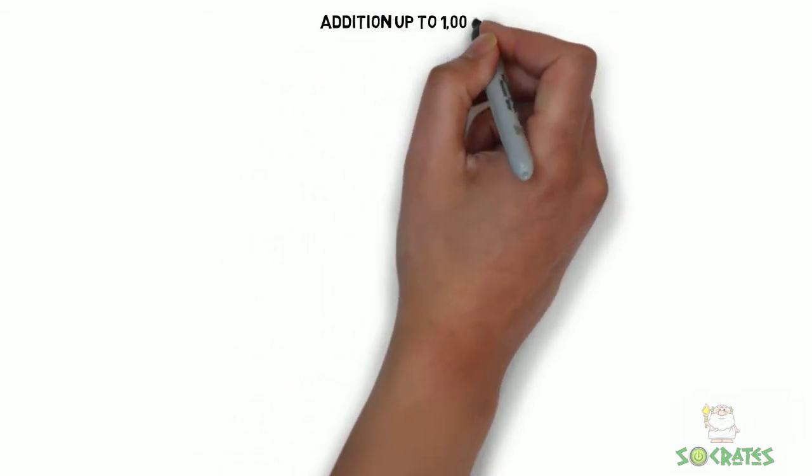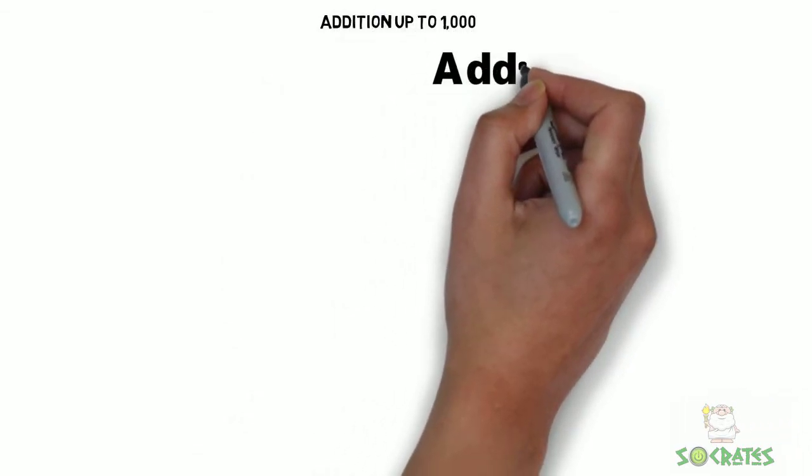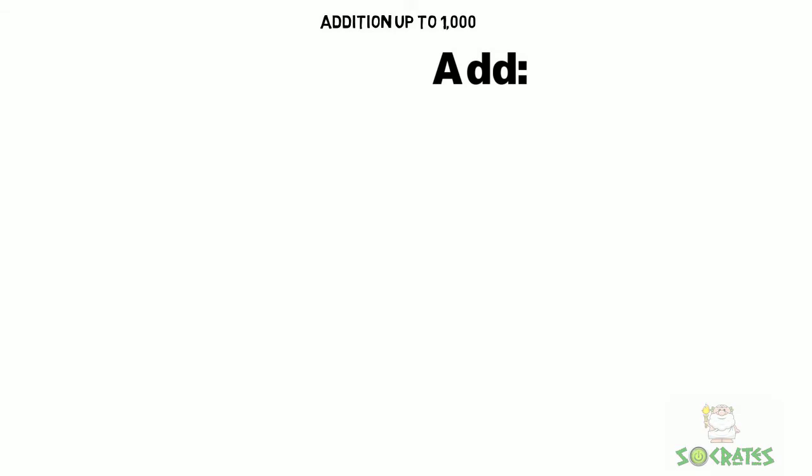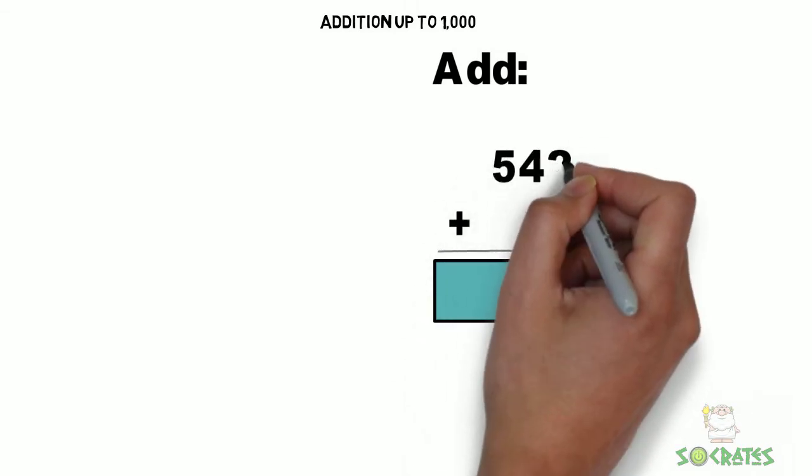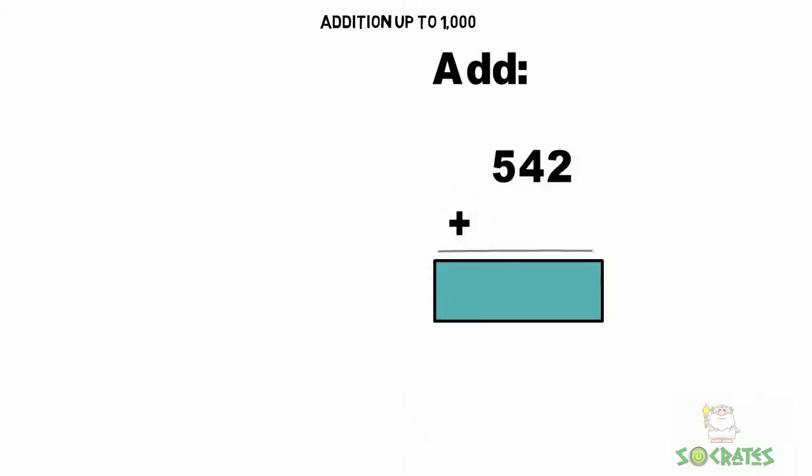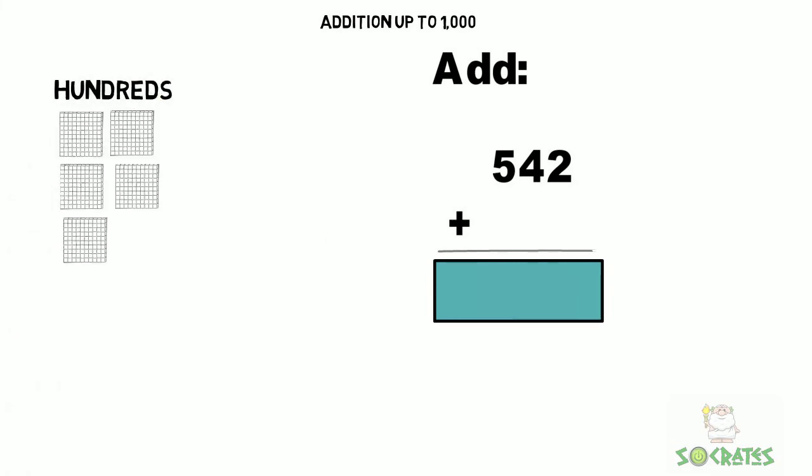Addition up to 1,000. Add 542. That's 5 hundreds, 4 tens, and 2 ones.